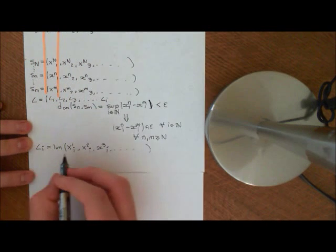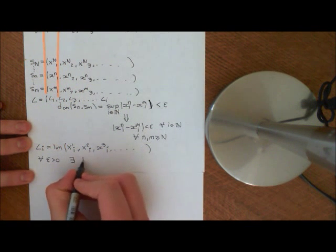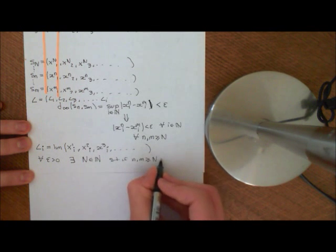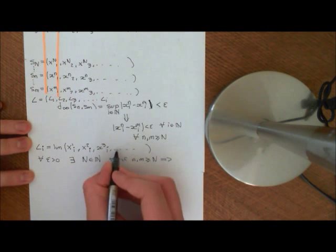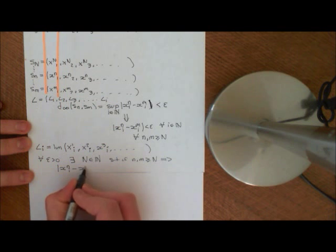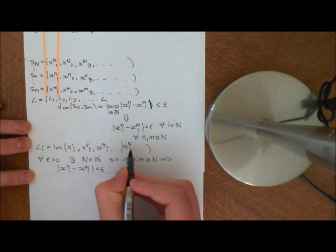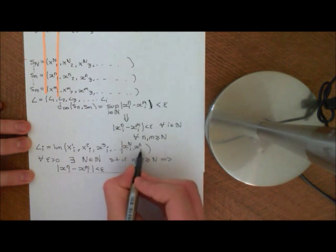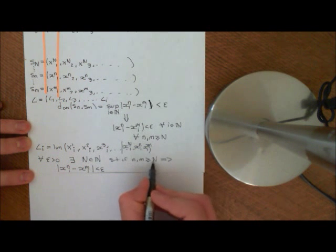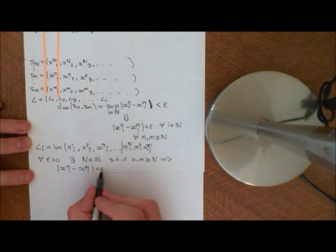To prove this is a Cauchy sequence, we need to show that for all epsilon greater than 0, there exists some natural number big N, such that if little n and little m are greater than or equal to big N, it implies that the distance between x_ni minus x_mi is less than epsilon. So I need to find some term x_{Ni} such that if I pick any two terms x_{ni} and x_{mi} beyond that big N, the modulus of one minus the other is less than epsilon.